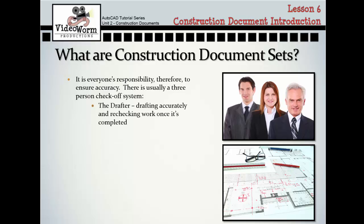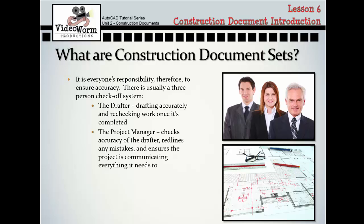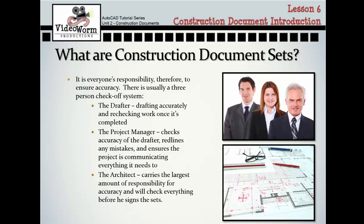The first person is the drafter — drafting accurately and rechecking work once it's completed is a really important step. The next person is the project manager, who checks the accuracy of the drafter, makes red lines if there are any mistakes, and ensures the project is communicating everything it needs to. The last person is the architect who signs off on the project — they carry the largest responsibility for accuracy and check everything before signing the set.